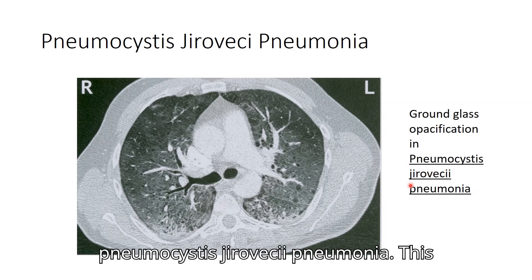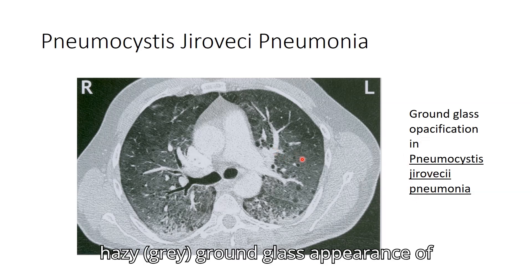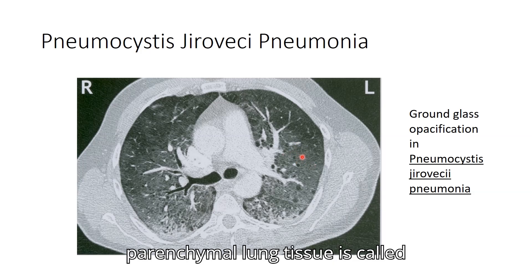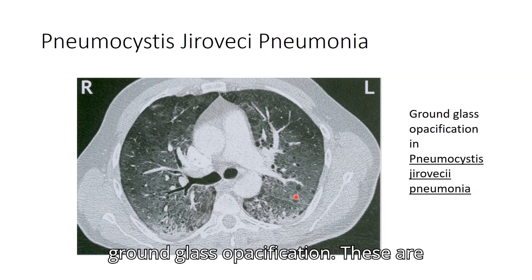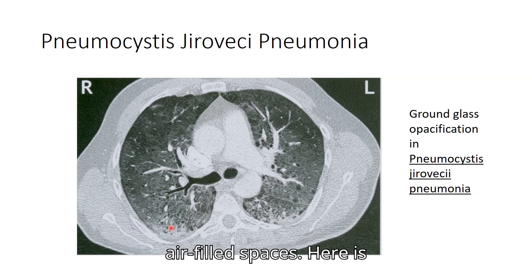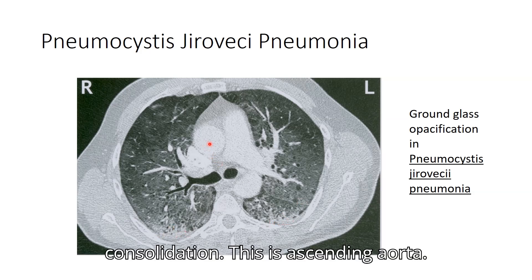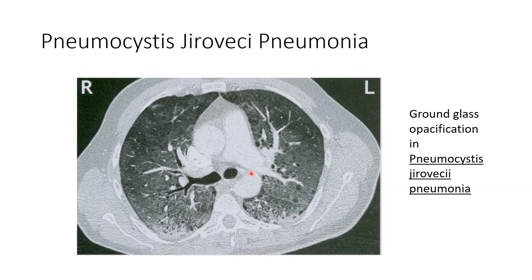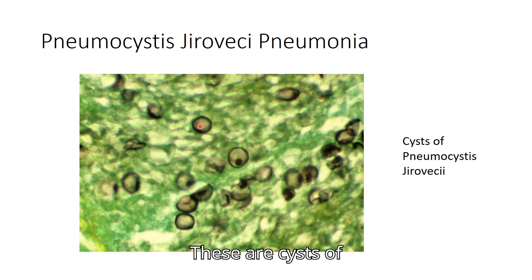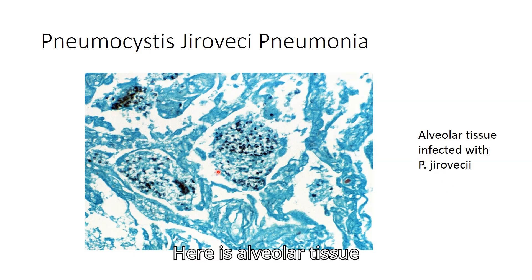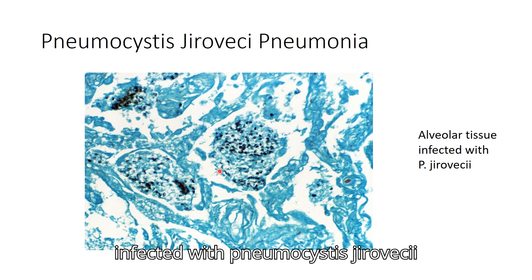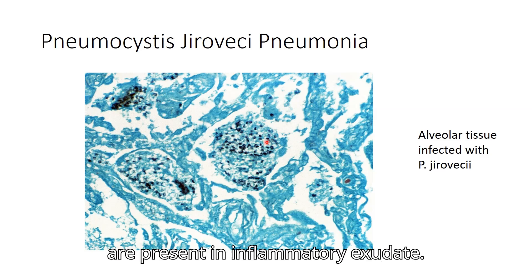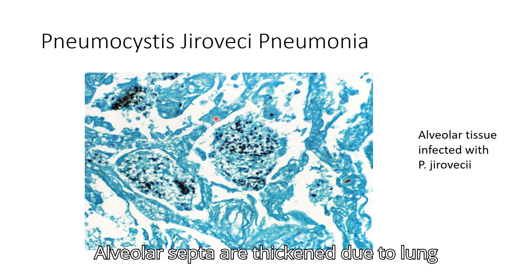Ground-glass opacification in Pneumocystis jirovecii pneumonia: this hazy ground-glass appearance of parenchymal lung tissue is called ground-glass opacification. Also visible are pneumatoceles—cystic air-filled spaces—as well as consolidation, the ascending and descending aorta, pulmonary trunk, right and left main bronchi. Separate images show cysts of Pneumocystis jirovecii, and alveolar tissue infected with Pneumocystis jirovecii showing black spores in inflammatory exudate with thickened alveolar septa due to lung inflammation.